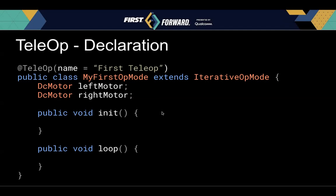To declare your first TeleOp — the program that runs during the driver controlled period — you have your class, and you can name it whatever you'd like. We extend IterativeOpMode because it breaks parts of the program into individual methods better. To ensure that it's visible on the driver's station, you annotate it with @TeleOp, and the name variable is whatever you want the driver's station to see. In this case, this op mode will appear on the driver's station under the TeleOp options with the name 'First TeleOp.'